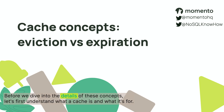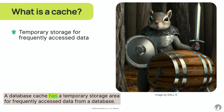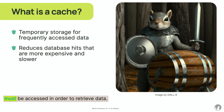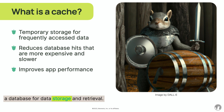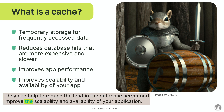Before we dive into the details of these concepts, let's first understand what a cache is and what it's for. A database cache is a temporary storage area for frequently accessed data from a database. The purpose of a database cache is to reduce the number of times the database must be accessed in order to retrieve data. Database caches are used to improve performance of applications that rely on a database for data storage and retrieval. They can help to reduce the load on the database server and improve the scalability and availability of your application.